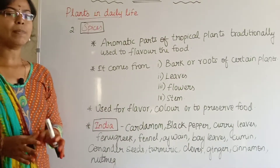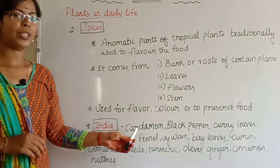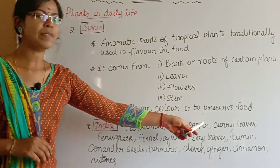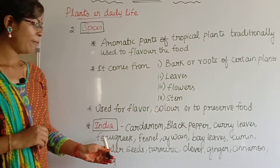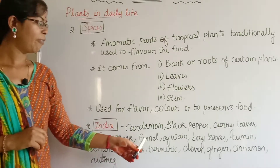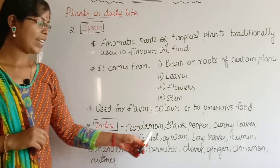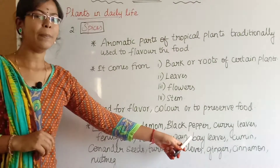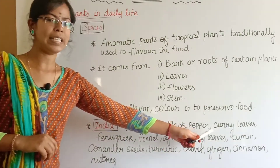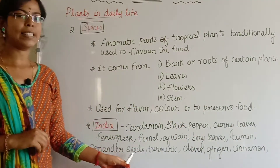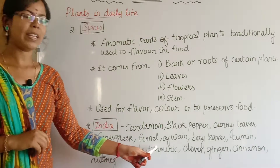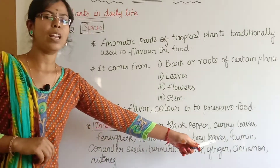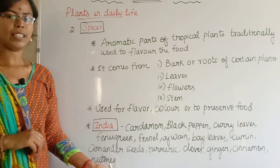Common spices we use include: cardamom (elakai), black pepper (karuppu milagu), curry leaves (kariveppilai), fenugreek (vendayam), fennel (perungayam vidai), ajwain (omam), bay leaves, cumin (jeeragam), coriander seeds (malli vidai), turmeric (manjal), cloves, ginger (inji), cinnamon (lavanga pattai), and nutmeg (jathikai).